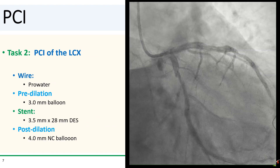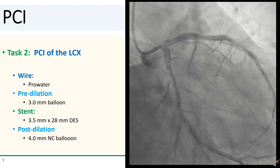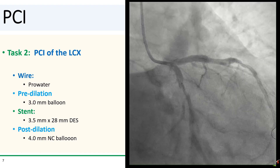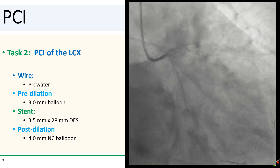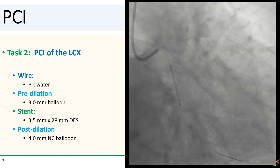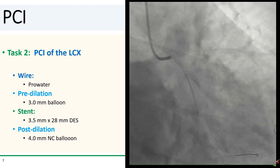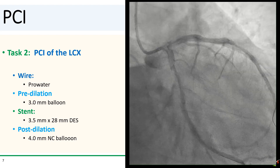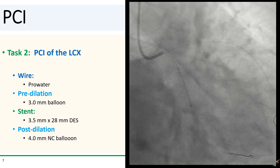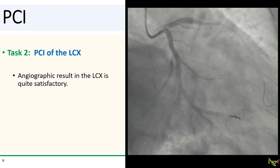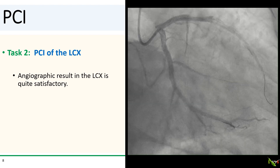Our goal was to do the circumflex with minimal contrast injections to avoid extending the LAD dissection. PCI of the circumflex was straightforward — the circumflex wired easily with the Pilot wire. We pre-dilated with a 3.0 balloon, stented with a 3.5 by 28 mm DES, and post-dilated with a 4.0 mm NC balloon. The final angiographic result in the circumflex turned out to be very satisfactory.